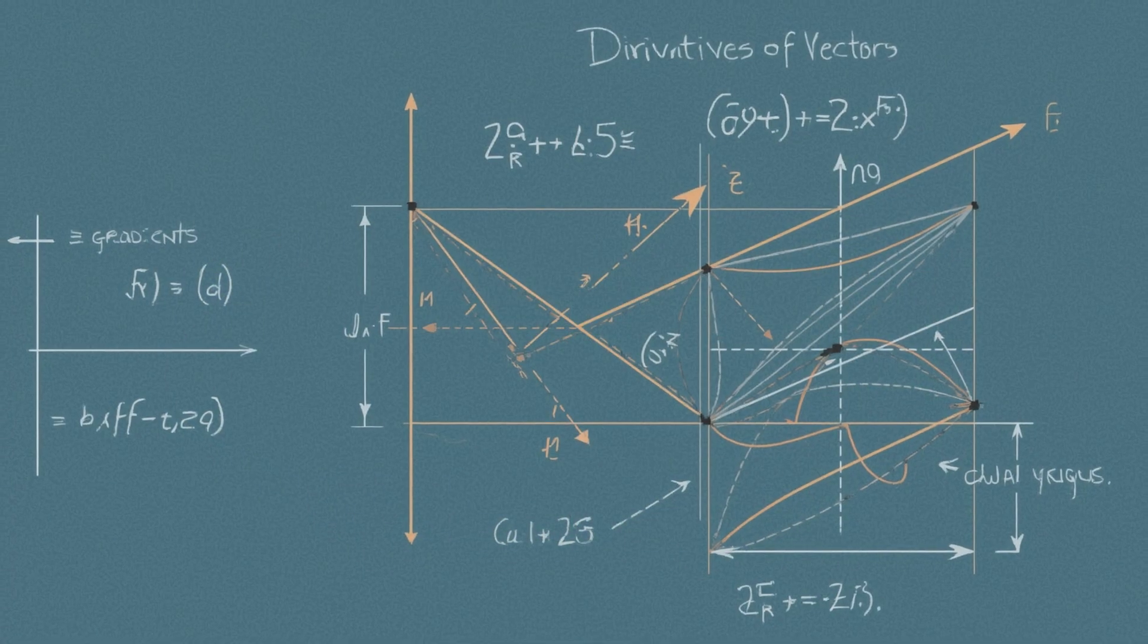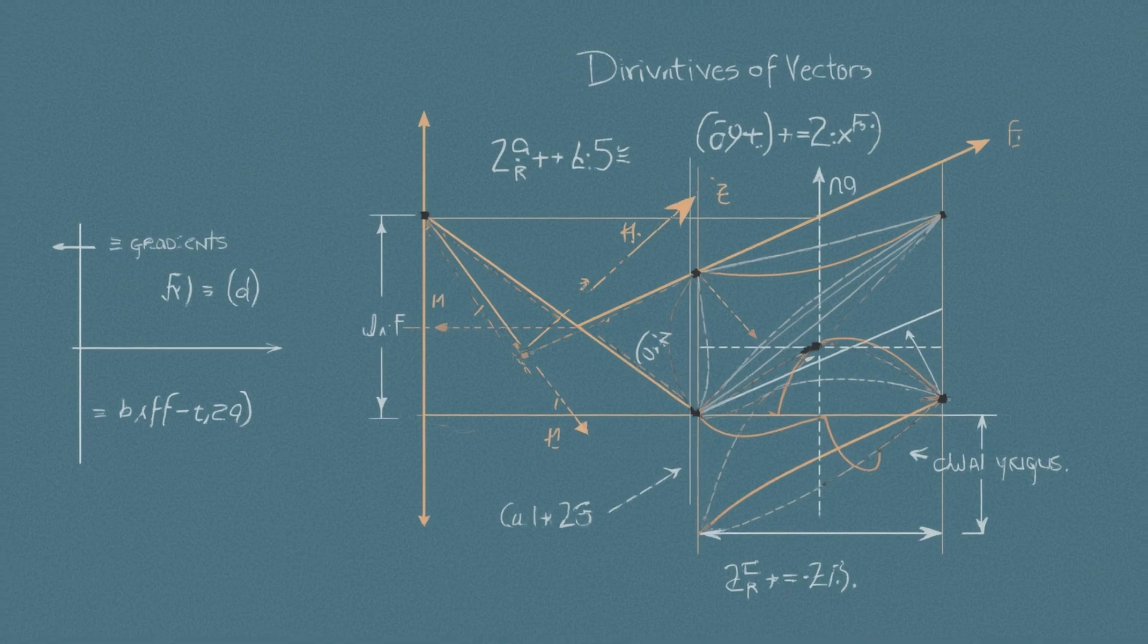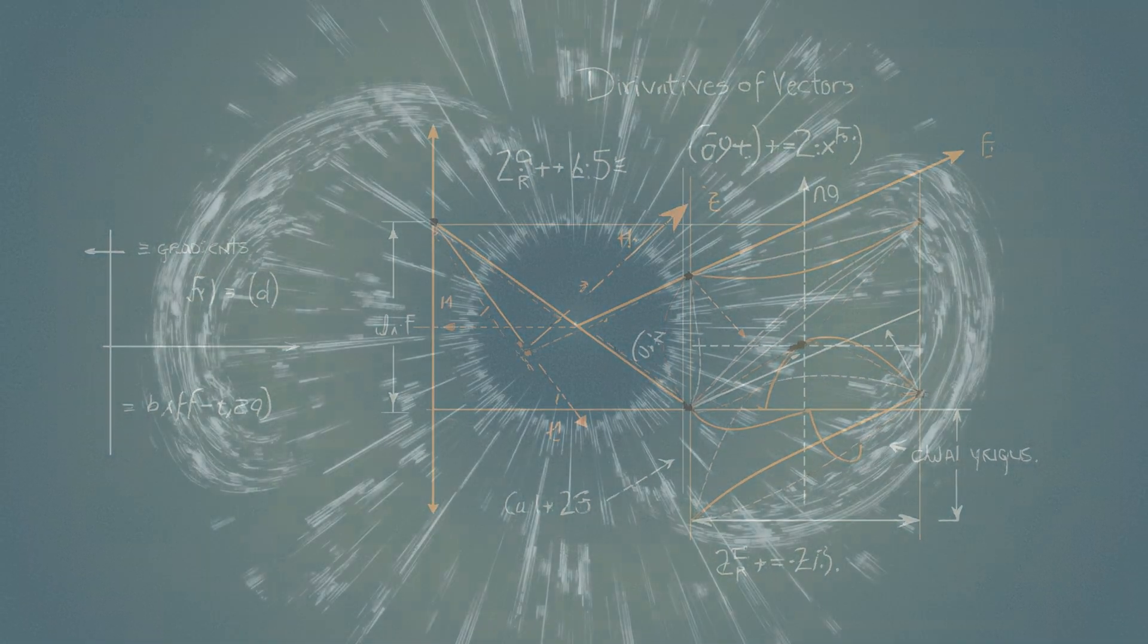When we take derivatives of vectors, we obtain gradients, divergences, and curls, mathematical operations that reveal how fields change in space. These operations are the essence of vector calculus, introduced by Gauss and Stokes, and essential to electromagnetism, fluid dynamics, and quantum field theory alike.